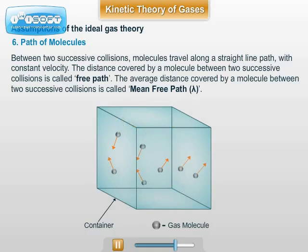Hence, lambda equals total distance traveled divided by total number of collisions. For example, if between 10 successive collisions a molecule travels 100 centimeter distance, then the mean free path lambda is 10 centimeters.